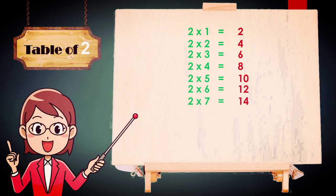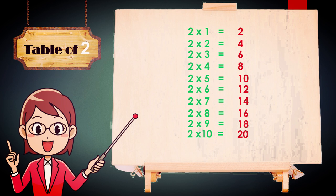Table of two: two ones are two, two twos are four, two threes are six, two fours are eight, two fives are ten, two sixes are twelve, two sevens are fourteen, two eights are sixteen, two nines are eighteen, two tens are twenty.